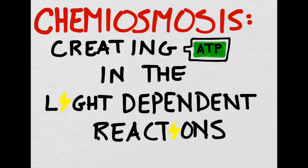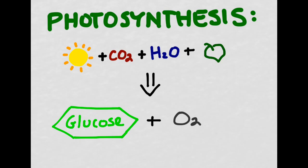This screencast will discuss chemiosmosis, the process of creating ATP during the light-dependent reactions of photosynthesis. In photosynthesis, our goal is to combine carbon dioxide and water inside the chloroplast of a leaf in order to ultimately generate glucose and oxygen.